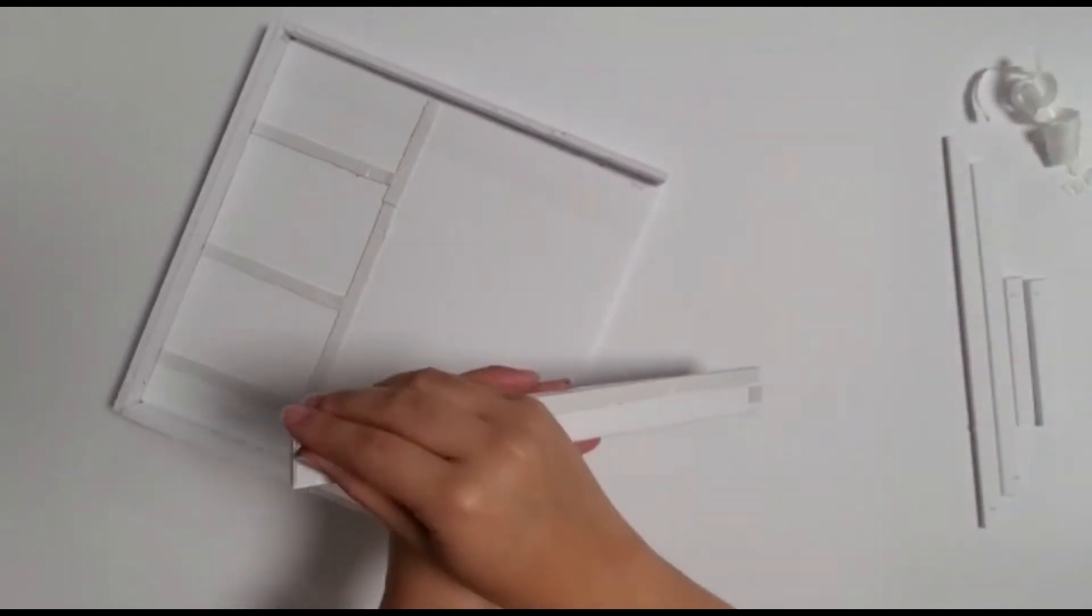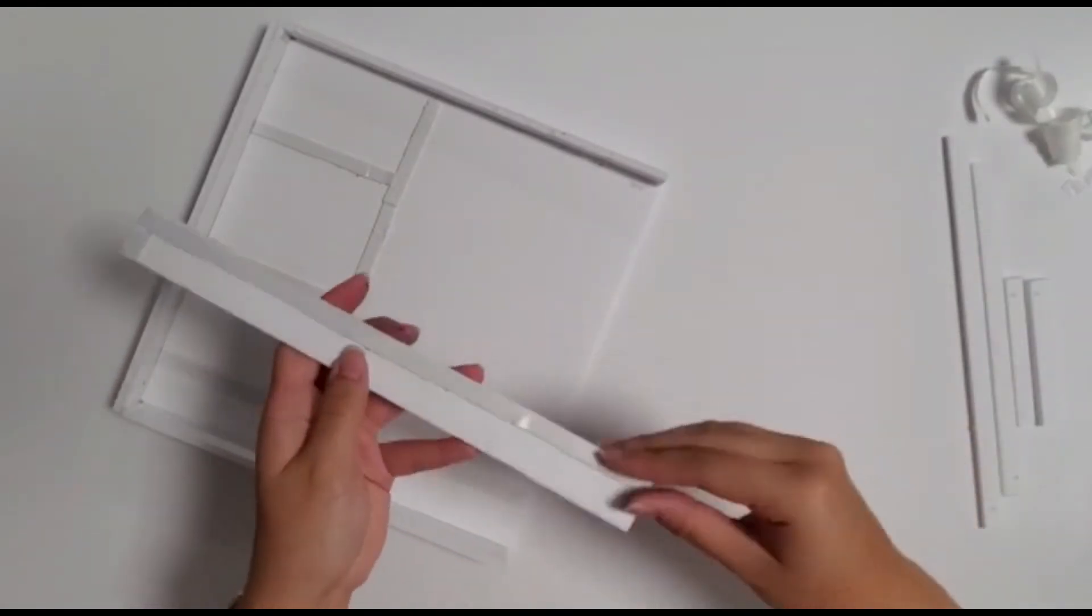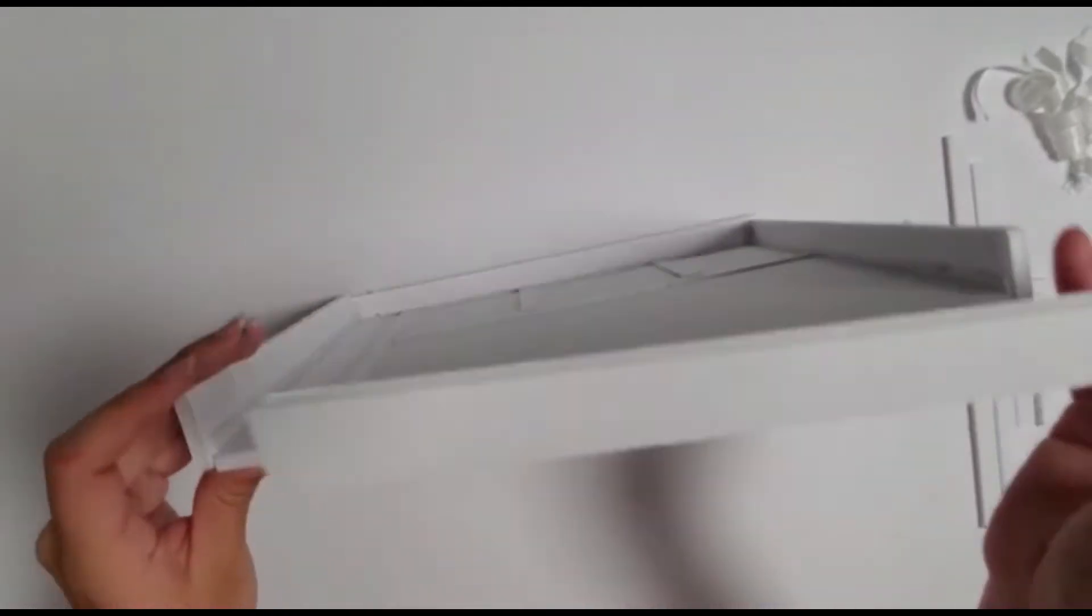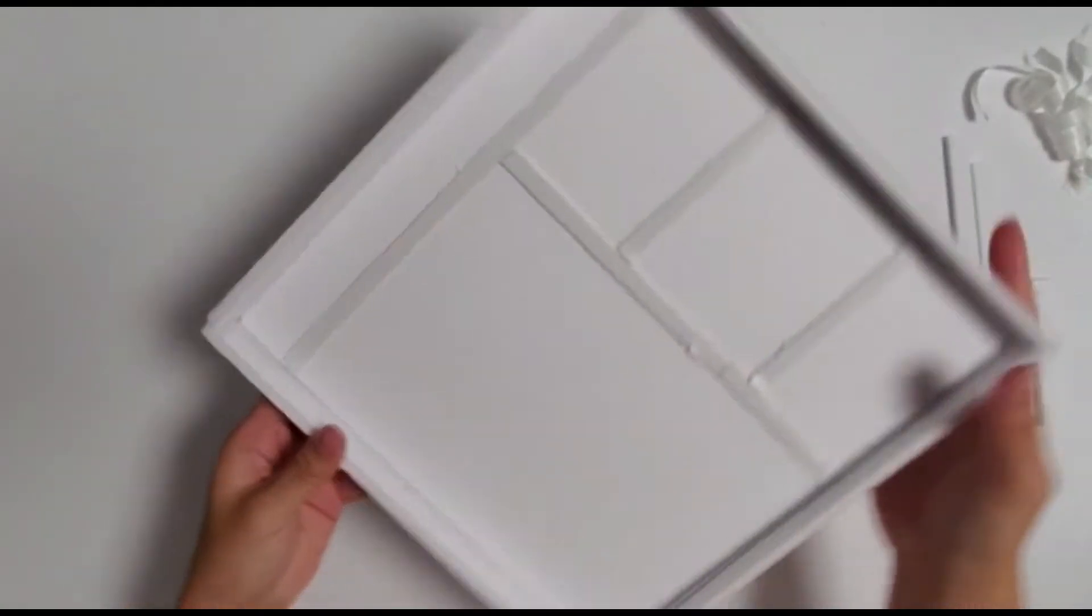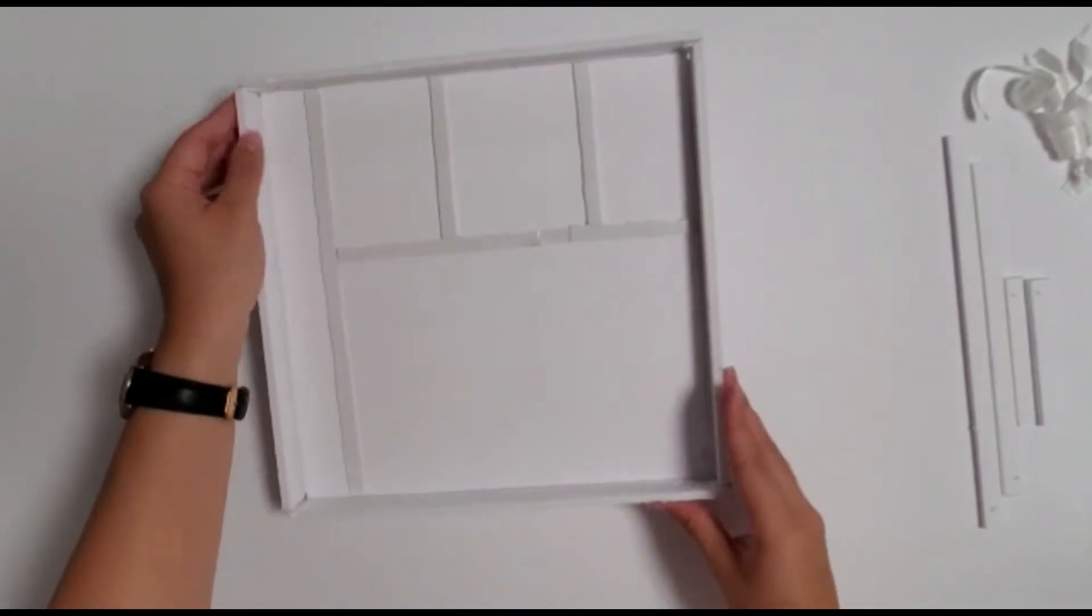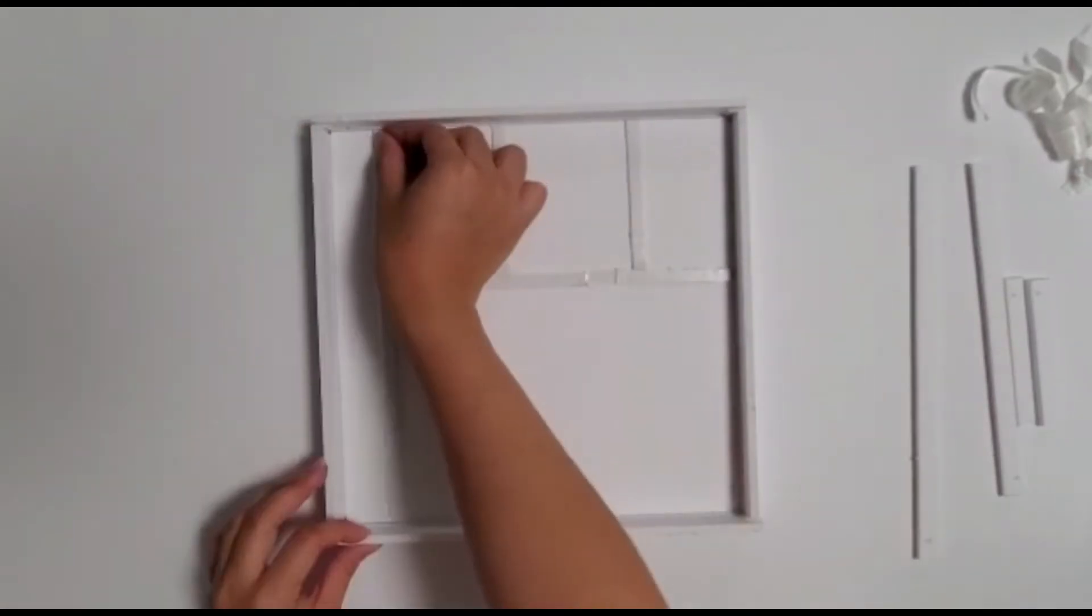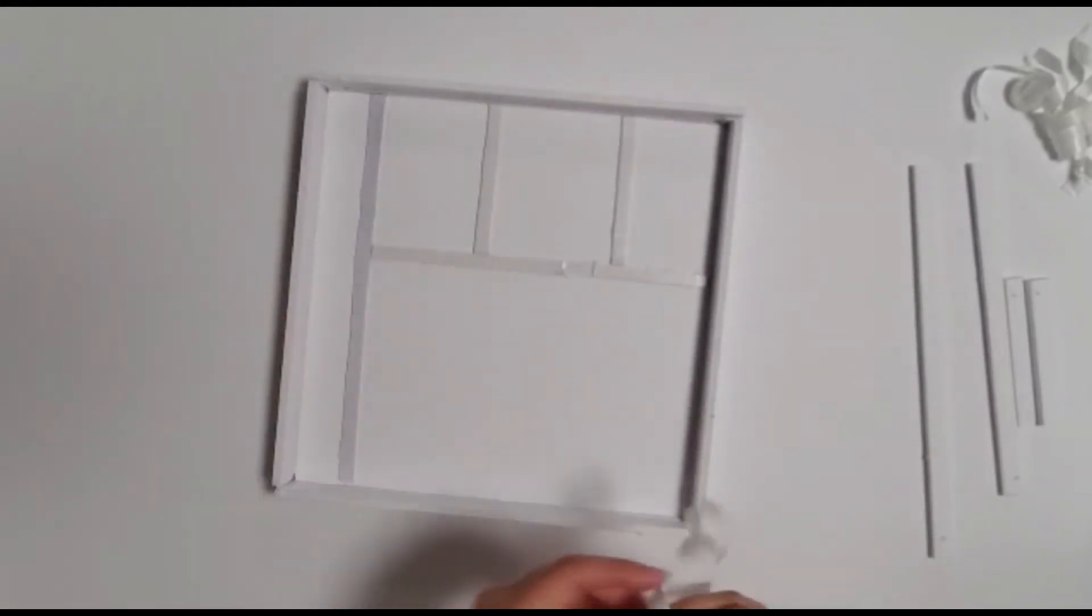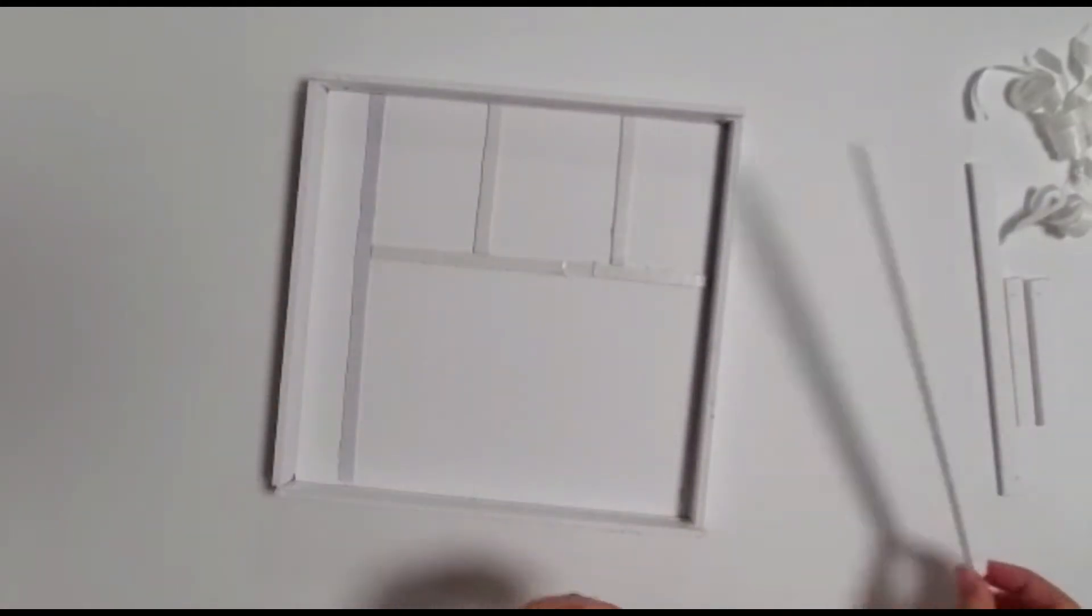Stick the other B piece on the opposite side. Peel off the longest piece of tape on top of the A piece and stick the D piece on top of it.